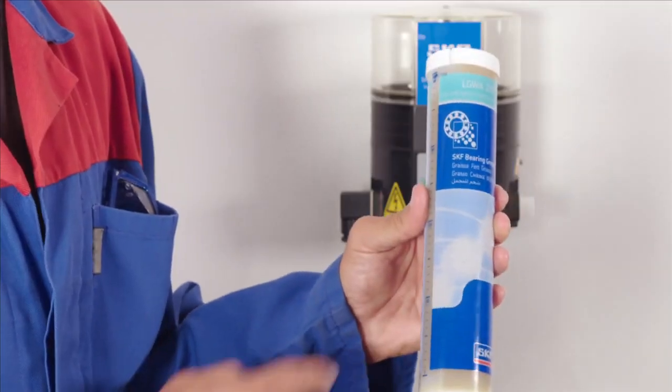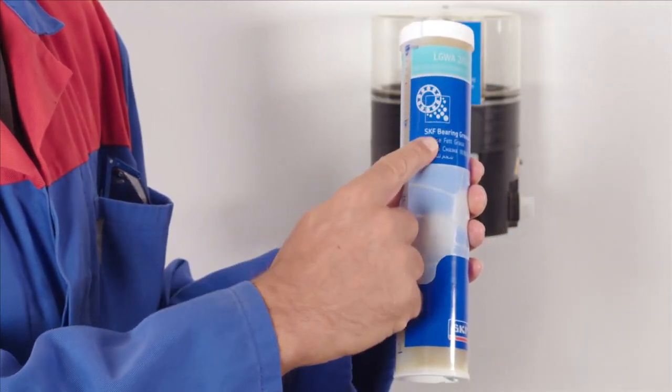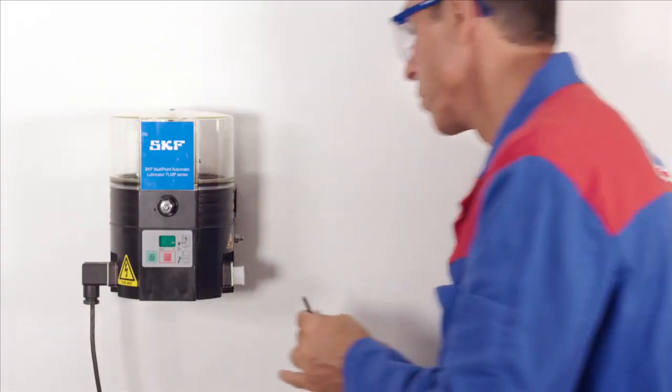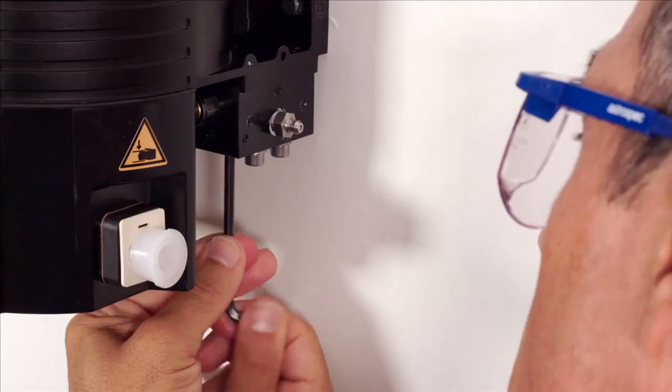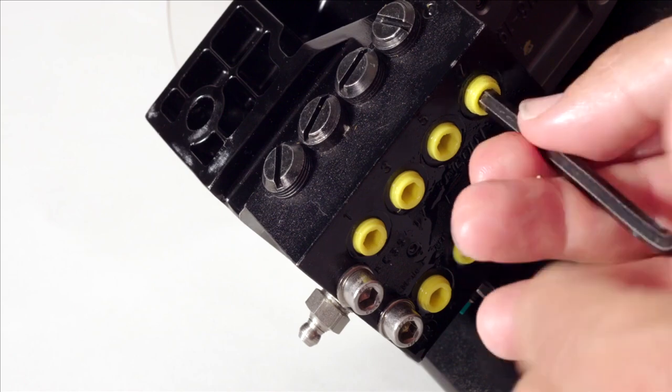Once the correct grease has been selected, the unit can be filled with fresh grease. Before filling the reservoir, screw out the yellow transport locks from the metering device outlets.